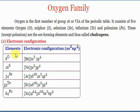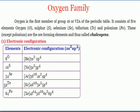Oxygen is 48% in the earth's crust because iron oxide, copper oxide, and all elements react with oxygen to form ore-forming materials. Sulfur is 0.03% in the earth's crust. Polonium is a radioactive element and has very less abundance.